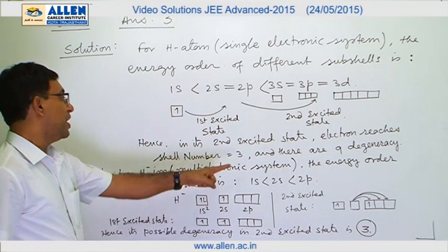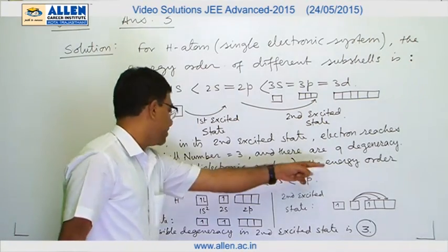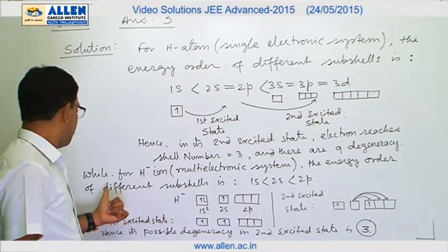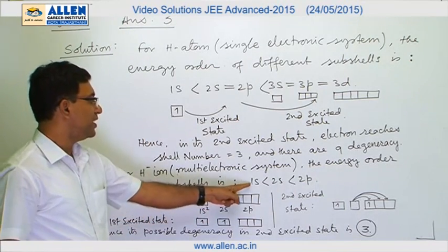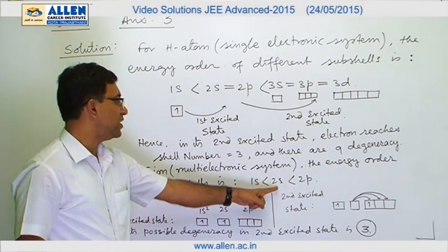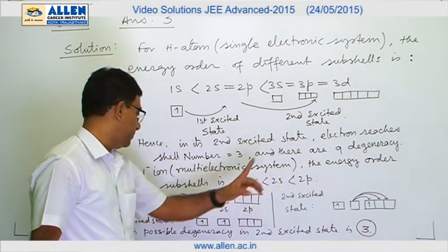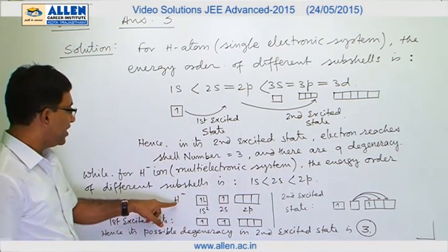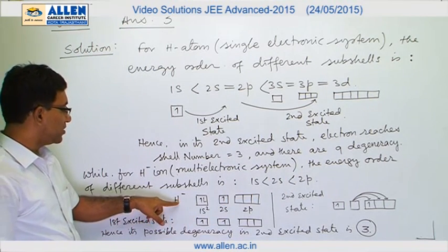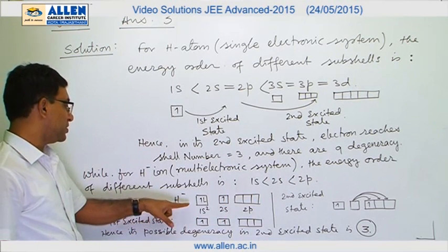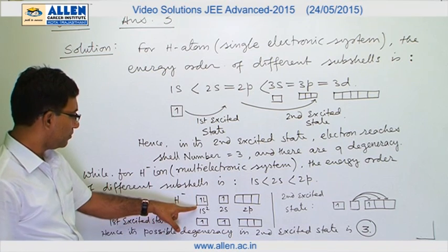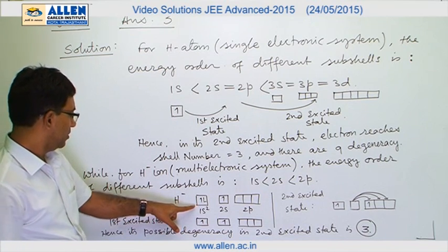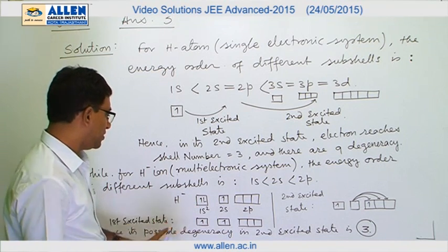For the H⁻ ion, it is a multi-electron system with two electrons (1s²). The energy order for different subshells is: 1s < 2s < 2p. The ground state electronic configuration of H⁻ is 1s².